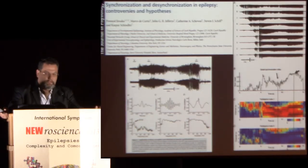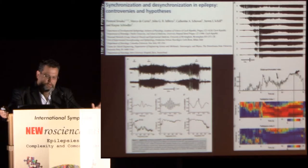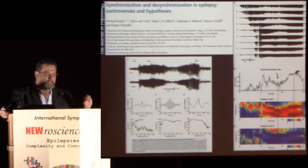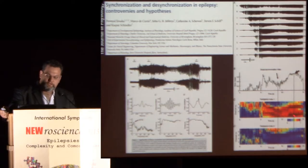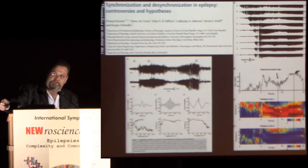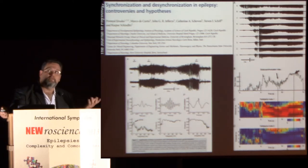There is evidence that micro-domains become hyper-excitable but not synchronized just before a seizure — a lack of synchronization precedes it. As they connect, synchronization occurs and the seizure develops. Principal component analysis reveals what appears to be attractors competing with each other. When one attractor wins and synchronizes everything, a full-scale seizure occurs.